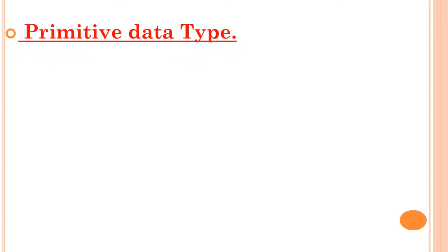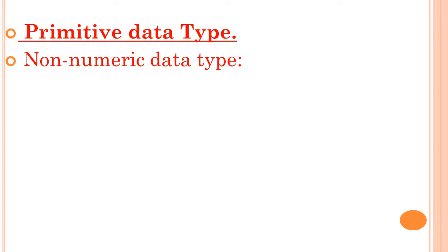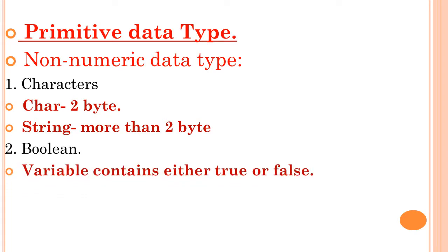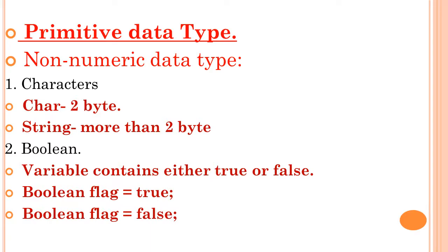In a primitive data type, the second category is non-numeric data type — data that is not in number form, such as characters. The character category includes two data types: char and string. Char stores one character in single quotes and takes 2 bytes of space. String is used to store a word, sentence, or paragraph. The second non-numeric type is boolean, which stores either true or false — for example, 'boolean flag = true' or 'boolean flag = false'.